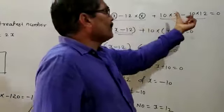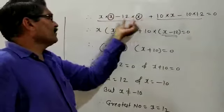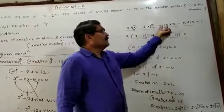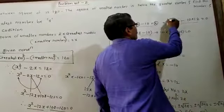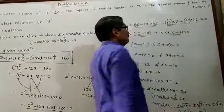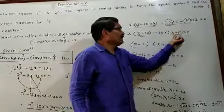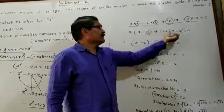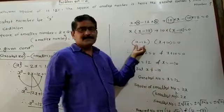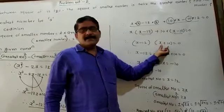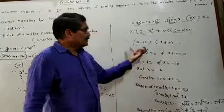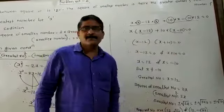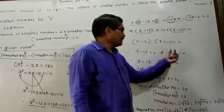Write x squared minus 12x plus 10x minus 120. Make groups of the first two terms and last two terms. Take x common from the first group, giving x(x minus 12). Take 10 common from the last two terms, giving 10(x minus 12). Both brackets are the same, so take out (x minus 12) as common, leaving (x minus 12)(x plus 10) equals zero.